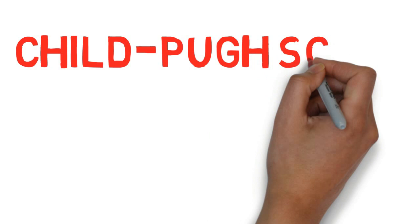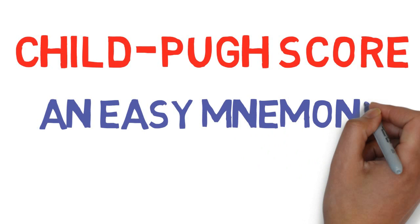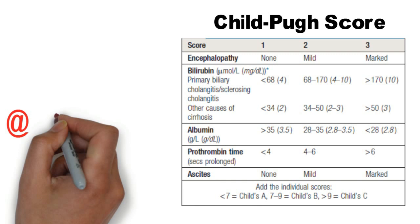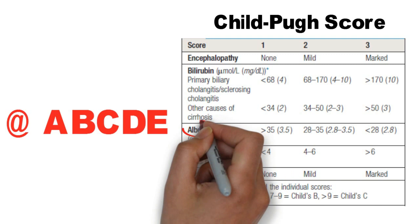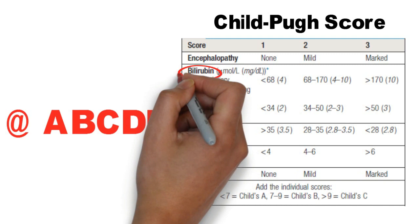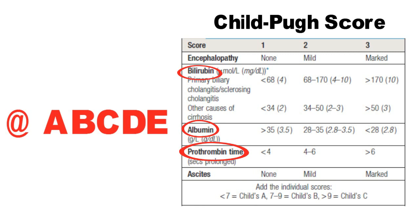In this video we'll learn an easy mnemonic to remember the parameters of the Child-Pugh score. The mnemonic is ABCDE: A is for albumin, B is for bilirubin, C is for clotting (that is prothrombin time), D is for distension (that is ascites), and E is for encephalopathy.